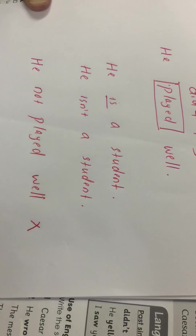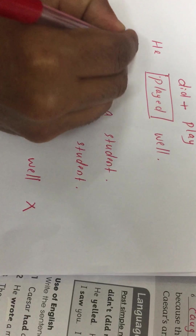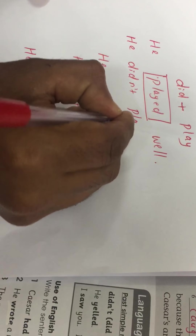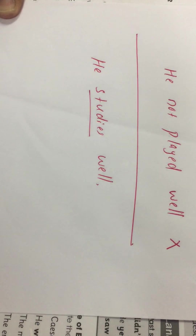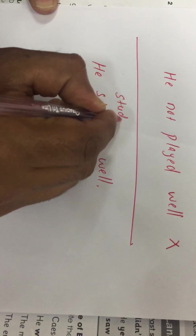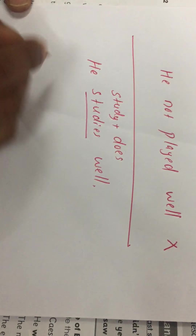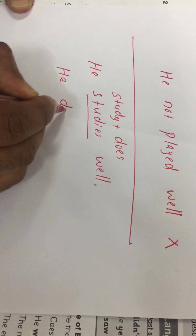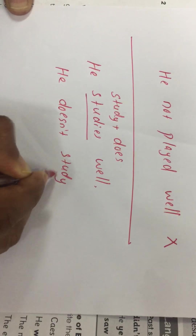We split 'played' into: did + play. So we get 'he did play well,' where 'did' is the auxiliary verb. Now you add 'not' — so it becomes 'he didn't play well.' Similarly for present tense: 'he studies well' — you split 'studies' into does + study, and the negative form is 'he doesn't study well.'